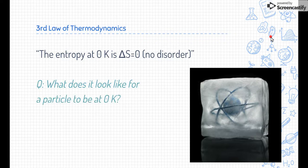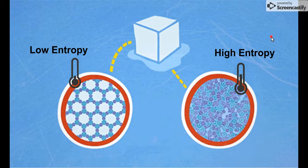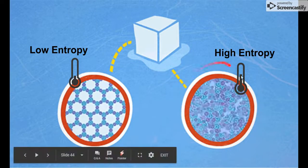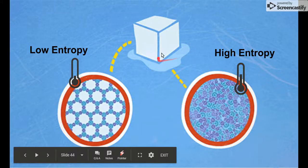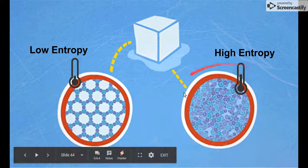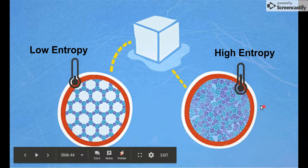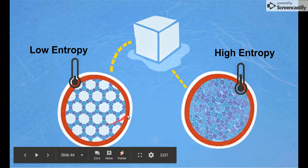So what does it look like for a particle to be at zero degrees Kelvin? Well, let's go back to our example with the ice. If you remember, there's a high entropy when it's more heated. That's when the ice turns into a liquid and those particles are moving around quite a lot. And there's a low entropy when it's a solid.